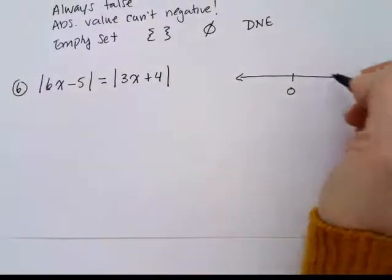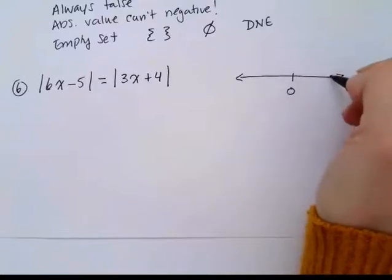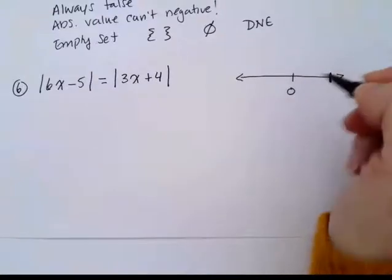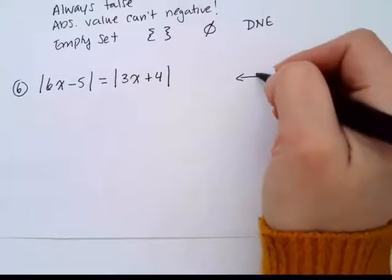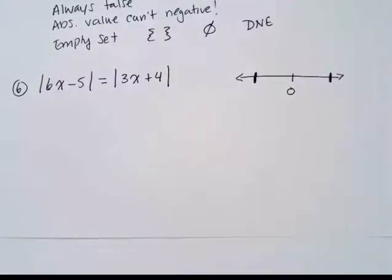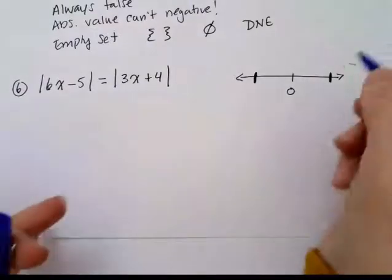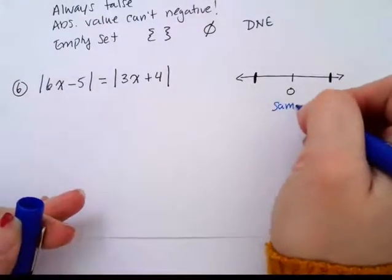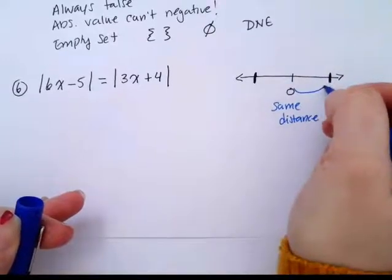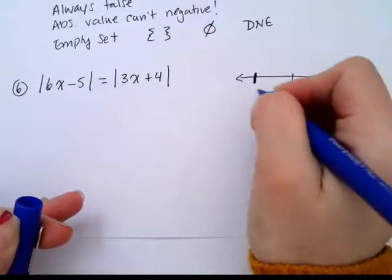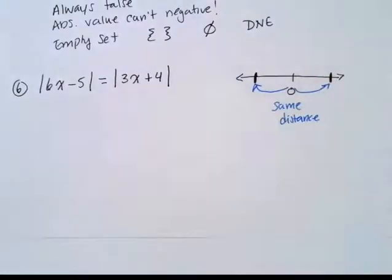So if I count out some units here and then I count out some, I want to go the same distance from here to here. So we have the same distance from 0. But maybe I have one on the positive side of 0, one on the negative side of 0. But they're equidistant from 0.